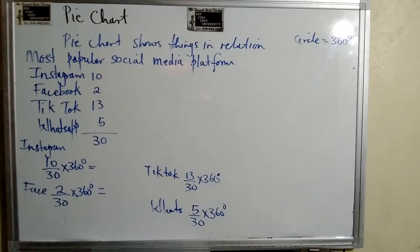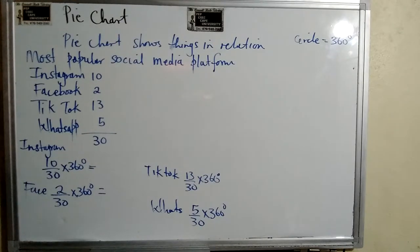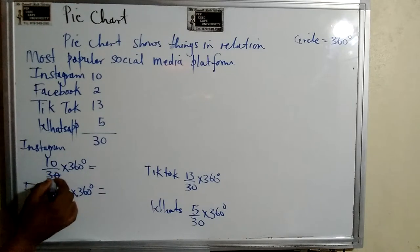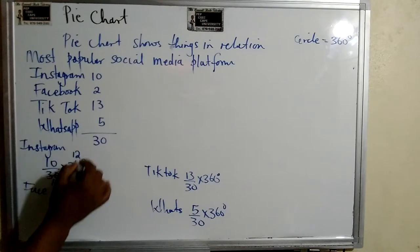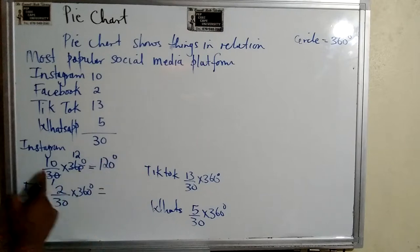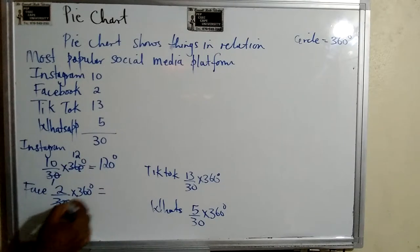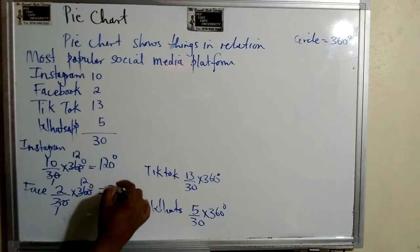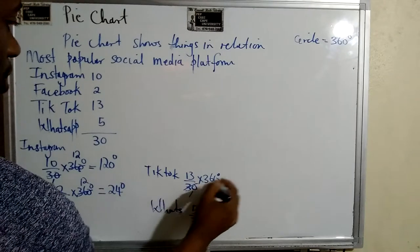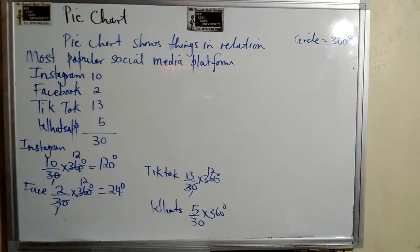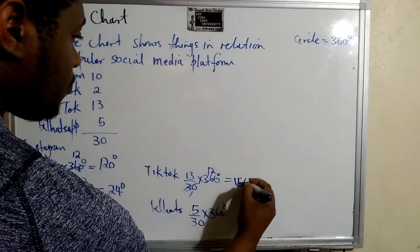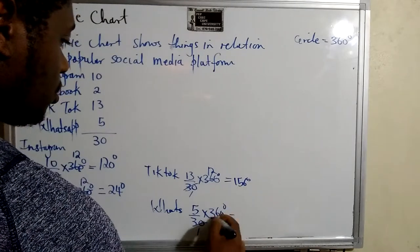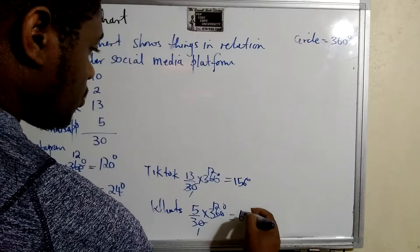Alright, so let's go. I'm going to just calculate. So this is 120 degrees. I'm going to multiply 10 times 12. This one is 12 times 2 is 24 degrees. 12 times 13, 132, 156. So this is 156. And this now, 5 times 12, 60 degrees, alright?